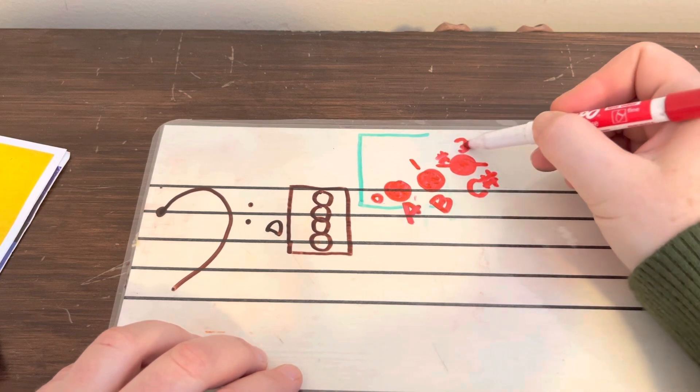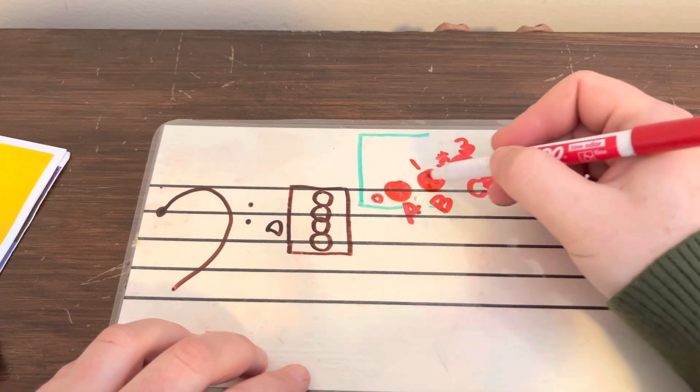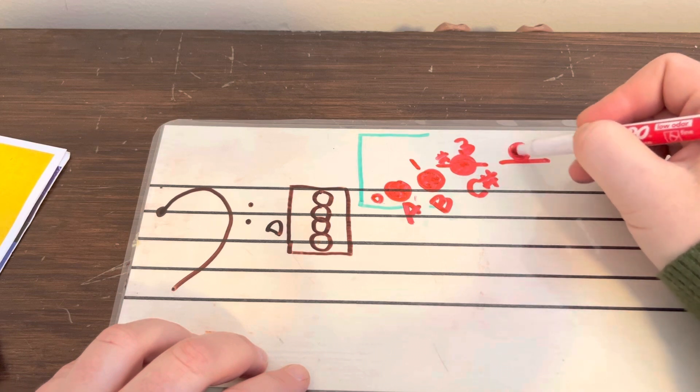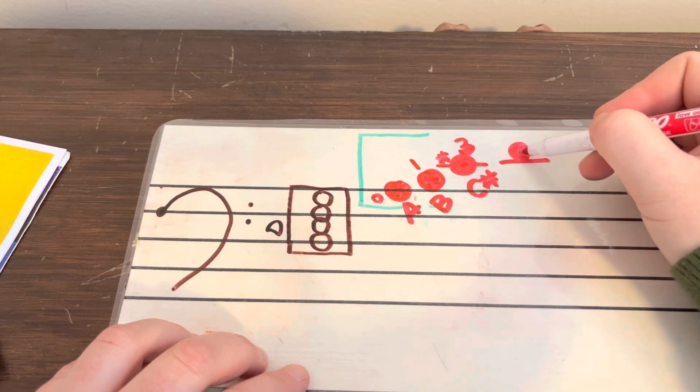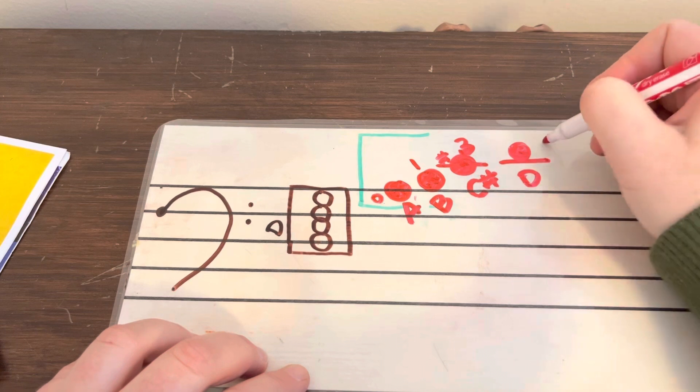Third finger. Two and three together. And then line, space, line. Our last one is sitting up here on top of the line in the space. It's our D fourth finger.